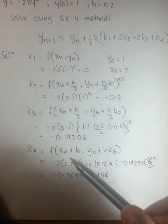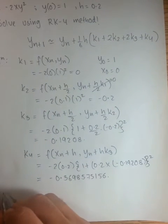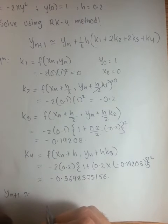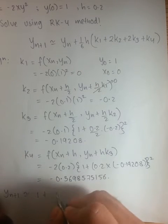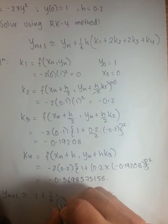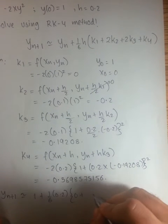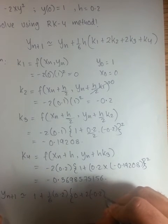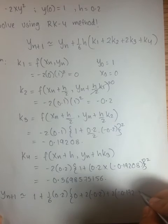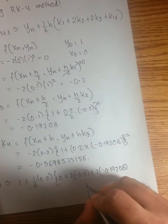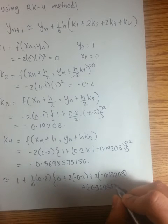You would just sub in these k values into the formula to find your yn plus 1 value. So yn plus 1 is approximately equal to yn, which is your initial value of y, that is 1, plus 1 sixth of h, and your h value is 0.2, plus 2 times k3, which is negative 0.19208, plus k4, which is negative 0.3698575156.